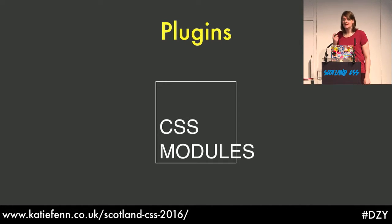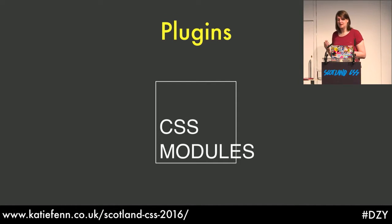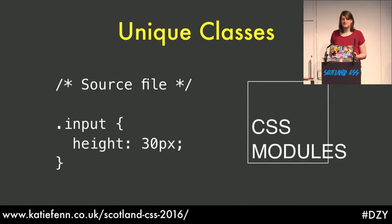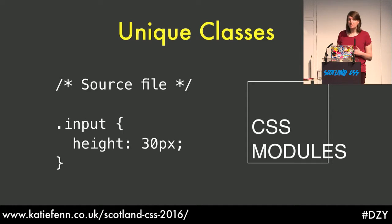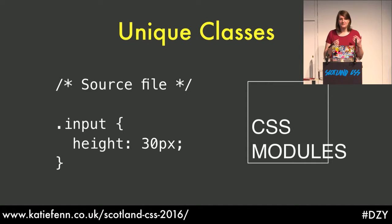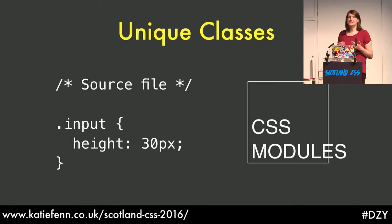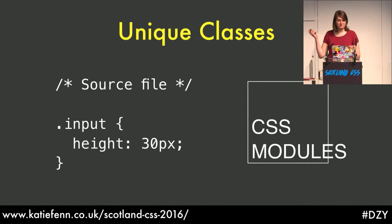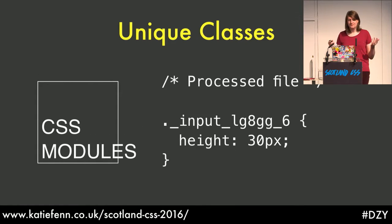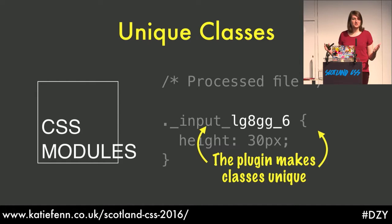This is what CSS modules aims to do for CSS - taking CSS out of the global scope and making it local by default. CSS modules isn't a single tool; it's a format developed by the community and a series of plugins that implement it. So how do you write a module of CSS? You write it very similarly to normal CSS, except rules are local by default. If you want to use CSS globally you have to define it using a special keyword. Your style sheets are processed by the CSS modules plugin, which works a little bit like Sass - your source code is fed in, transformed, and output at the other end.